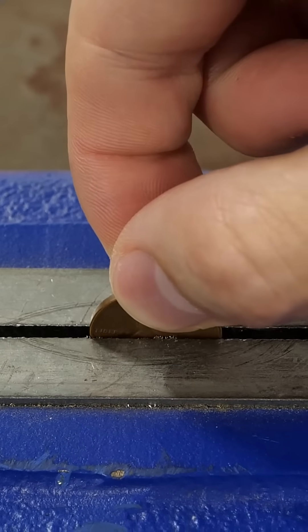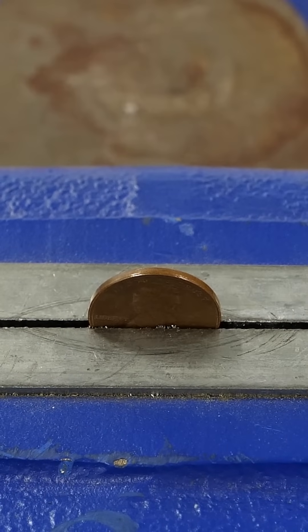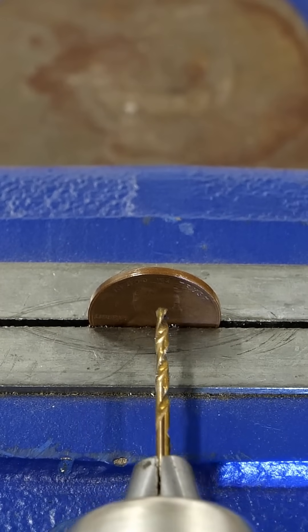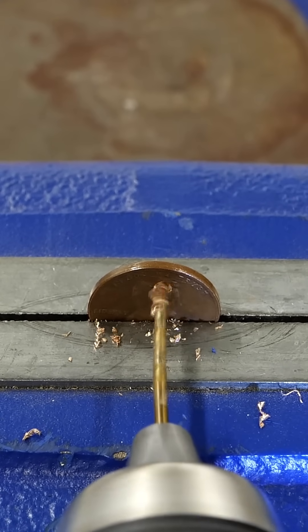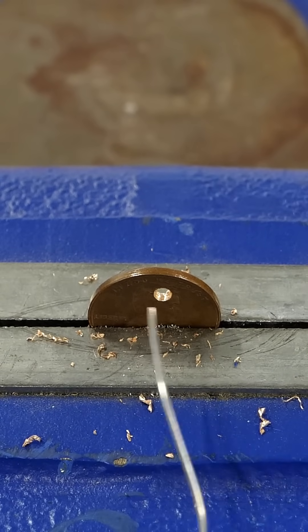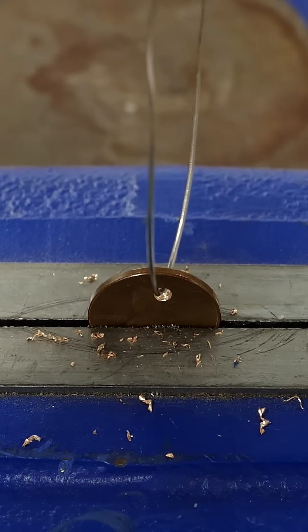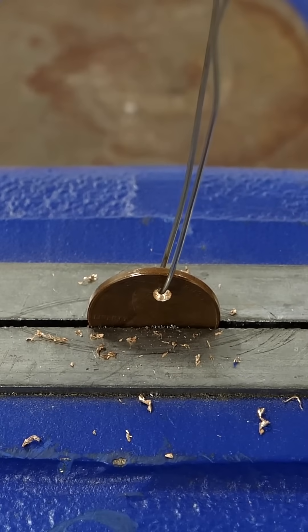Now I can prep the penny, and all I need to do is clamp it down and drill a small hole in it. I'll then put some metal wire through the hole, and the penny's good to go.